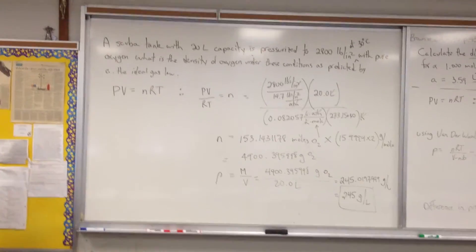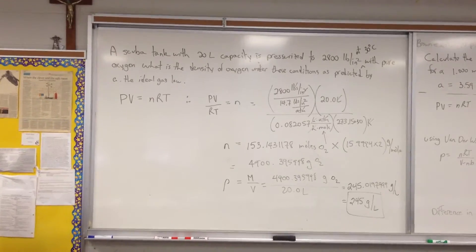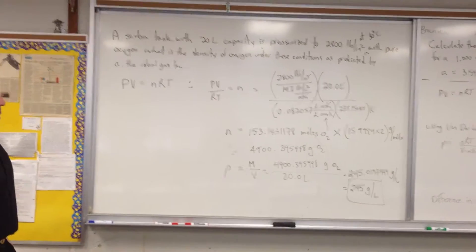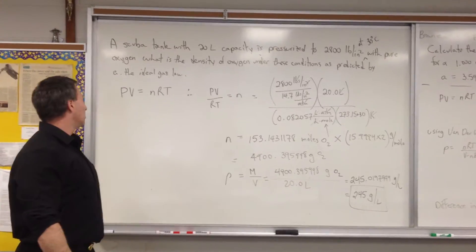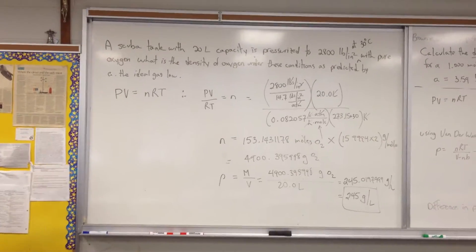This question relates to the use of the ideal gas law. It has PV equals NRT. A scuba tank with 20 liters of capacity is pressurized to 2,800 pounds per square inch at 33 Celsius with pure oxygen. What is the density of oxygen under these conditions as predicted by the ideal gas law?